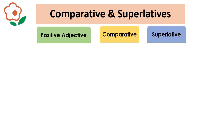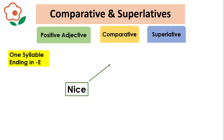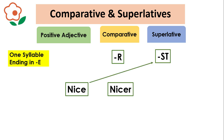Here are some rules to make the comparatives and superlatives of an adjective. When we have a one-syllable word ending in E, we add only R and ER. For example, for the adjective 'nice', we add R and it will be 'nicer'. To make it superlative, we add only ST and it will be 'nicest'.